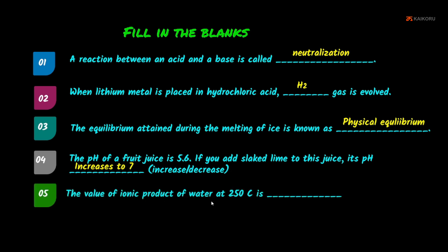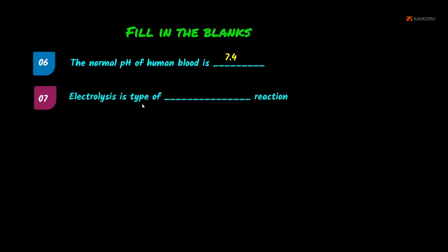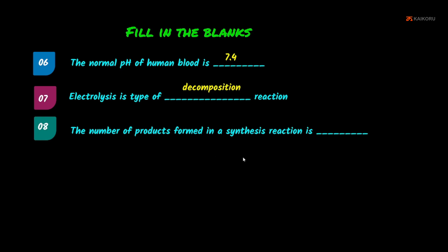Fifth: the ionic product of water at 25°C is 1 × 10⁻¹⁴. Sixth: the normal pH of human blood is 7.4. Seventh: electrolysis is a type of decomposition reaction. Eighth: the number of products formed in a synthesis (combination) reaction is one — two reactants give one product, so the answer is one.